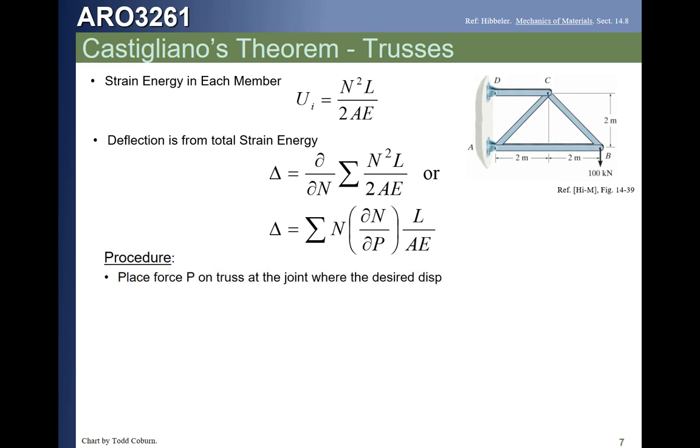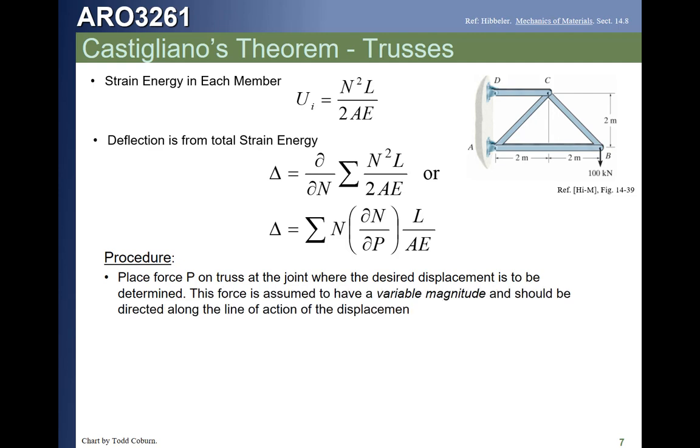Our procedure, then, will be to place a force on the truss at the joint where the displacement is wanted. So, let's say we want the displacement, the vertical displacement at point B. This particular structure has a force at that point. Therefore, we can use that force at that point in order to solve the problem for the deflection. If we had instead wanted the deflection in the x direction, we would have had to apply a virtual force or an imaginary force at point B in the x direction. Since there's already a force in the vertical direction, we want the deflection in the vertical direction, we don't have to add anything.